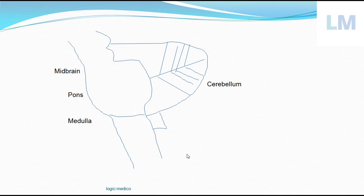At this angle, the most important cranial nerve especially for speech and hearing — the eighth cranial nerve — emerges. The eighth cranial nerve is the vestibulocochlear nerve. It has two divisions: the cochlear division helps in hearing, and the vestibular division helps in balance.